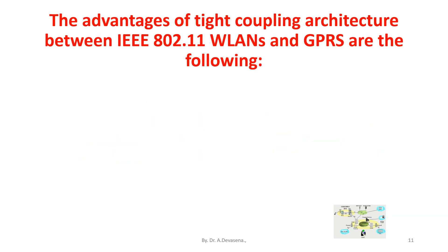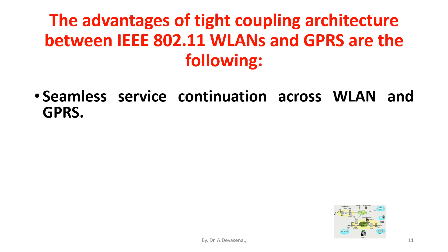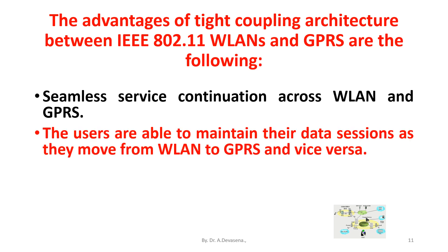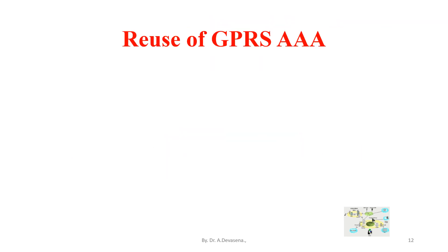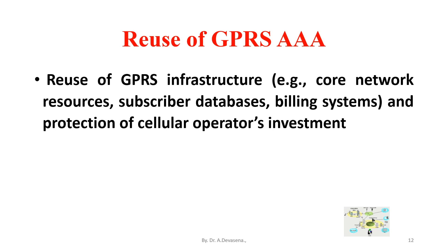The advantages of tight coupling architecture between IEEE 802.11 WLAN and GPRS are the following. Seamless service continuation across WLAN and GPRS: users are able to maintain their data sessions as they move from WLAN to GPRS and vice versa. For services with tight coupling quality of service requirements, seamless service continuation is subject to WLAN QoS capabilities. Reuse of GPRS AAA and reuse of GPRS infrastructure — for example, core network resources, subscriber databases, and billing systems.